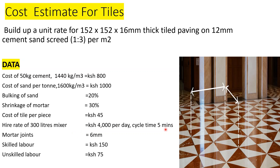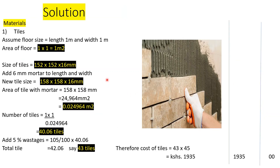The hire rate of a 300-litre mixer is 4,000 per day with a cycle time of 5 minutes. Mortar joint is 6 mm. Skilled labor is 150 and unskilled labor is 75 per hour. We will assume any other necessary information not given. Let's proceed with the solution.